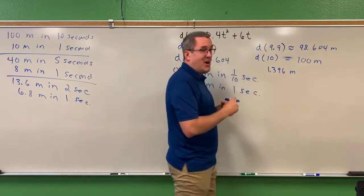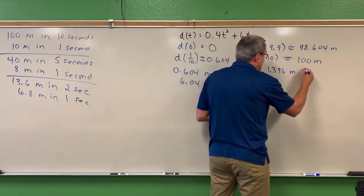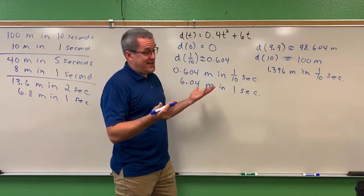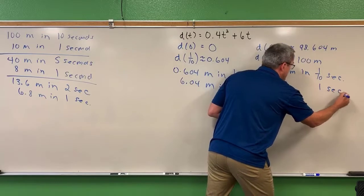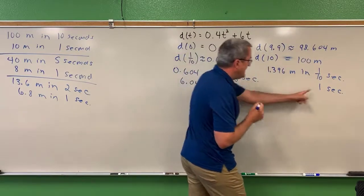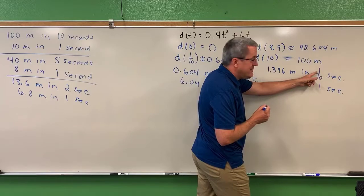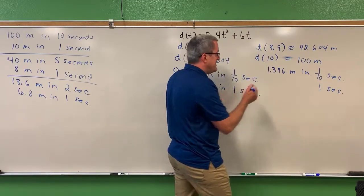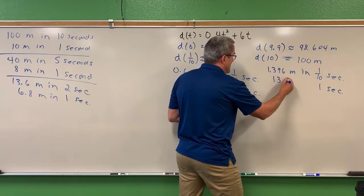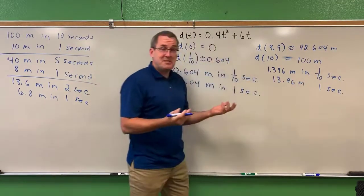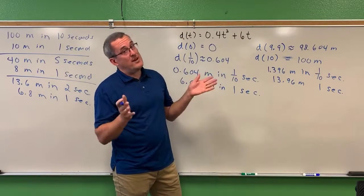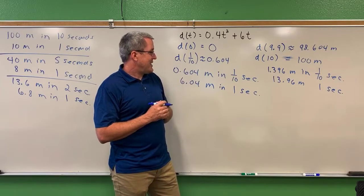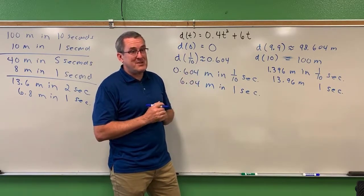He ran the last almost 1.4 meters in one-tenth of a second. Let's scale that up to see what happens in one full second. One second is 10 times one-tenth of a second, so we scale the distance up by a factor of 10, giving 13.96 meters. So as he's crossing the finish line — at least in that last tenth of a second — we can say he's running 13.96, almost 14 meters per second.